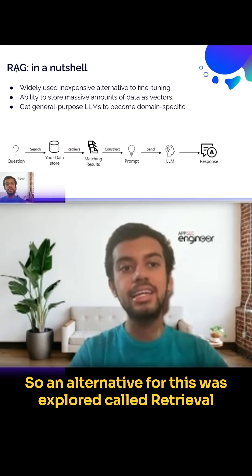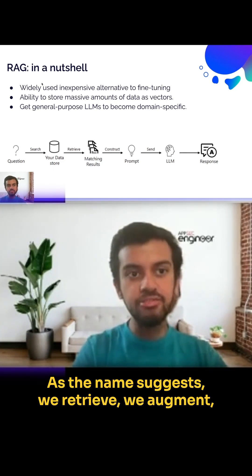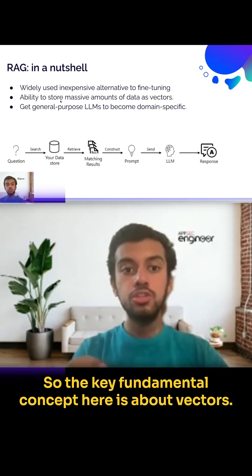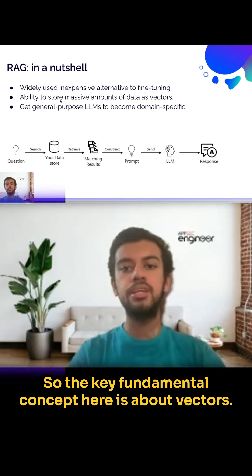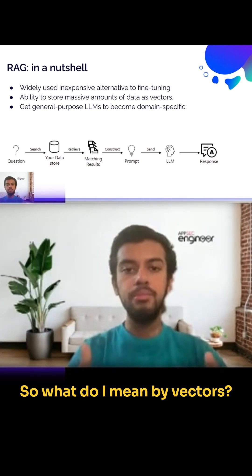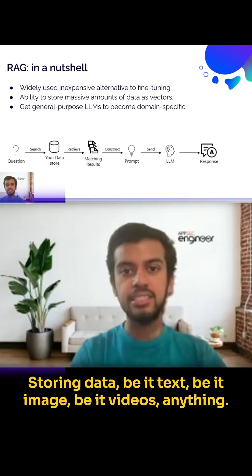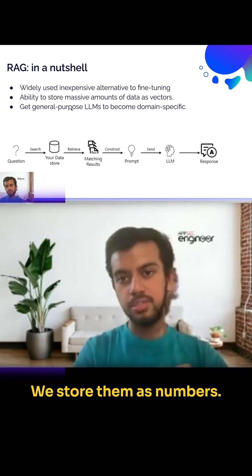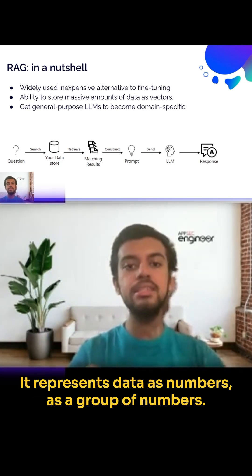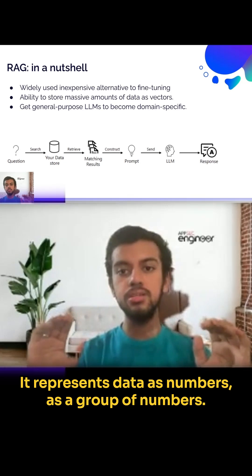It's called Retrieval Augmented Generation. As the name suggests, we retrieve, we augment, and then we generate. The key fundamental concept here is about vectors. When storing data — be it text, images, or videos — we store them as numbers, representing data as a group of numbers.